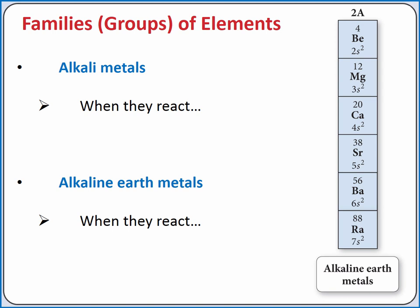Group 2A elements are called alkaline earth metals. These metals are slightly less reactive than alkali metals, and tend to lose two electrons when they react, because they have two electrons in their outermost S subshell.